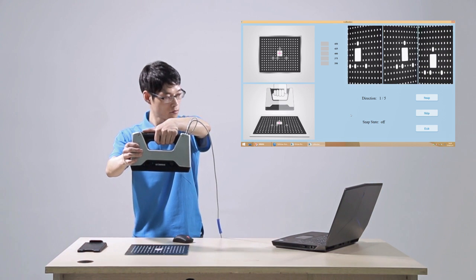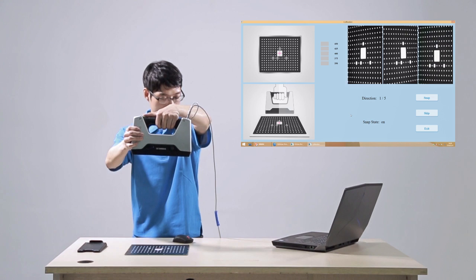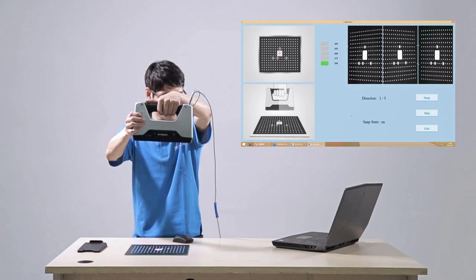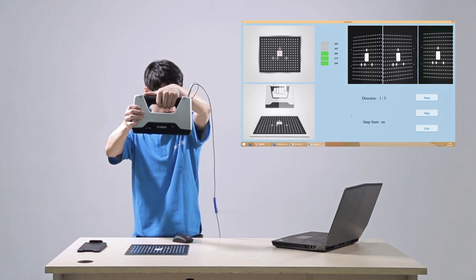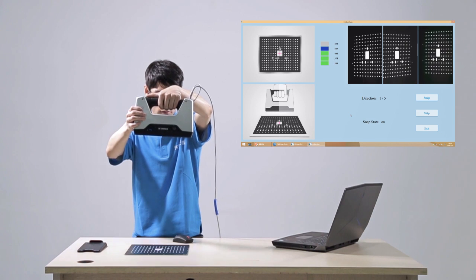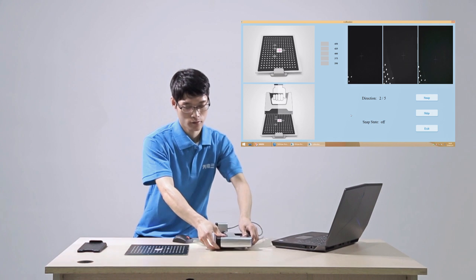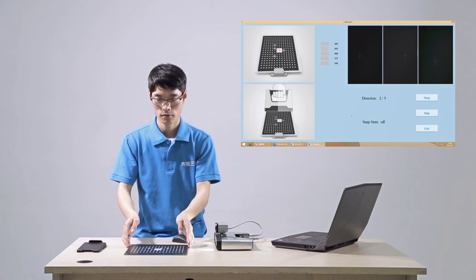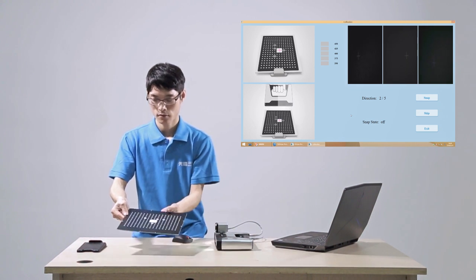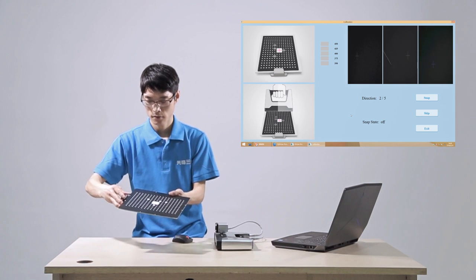Press the start button on the scanner to turn on capturing, so the snap state in the software turns to on. Then, track the cross image projected from the scanner, directing it to the white frame on the board.